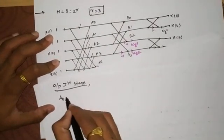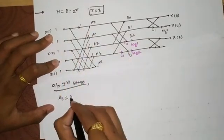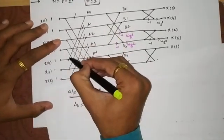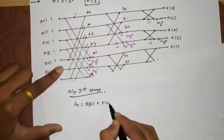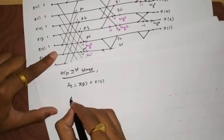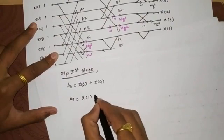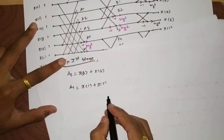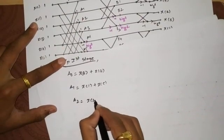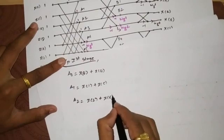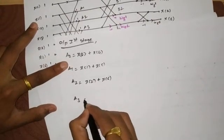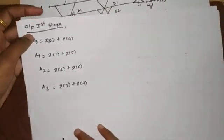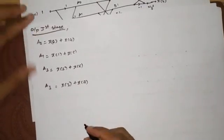For the first stage decimation output equations: A0 = X0 + X4; A1 = X1 + X5; A2 = X2 + X6; A3 = X3 + X7. Each term is simply the addition of a sample with the sample that is 4 indices ahead — this pattern is easy to remember.